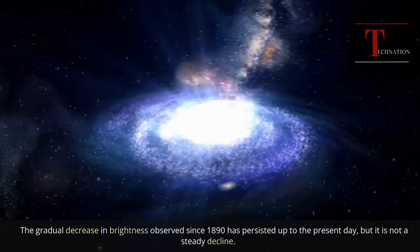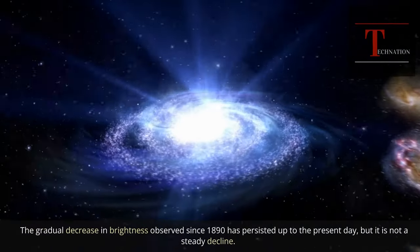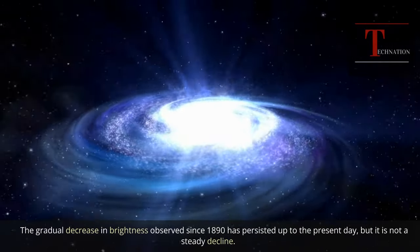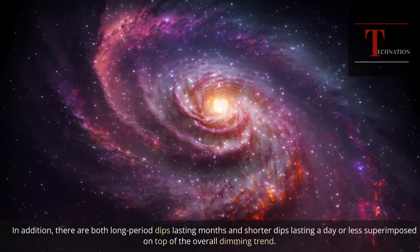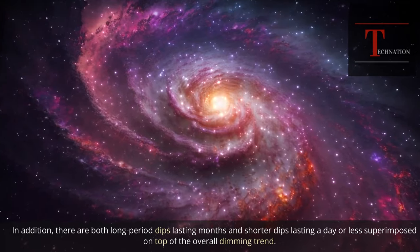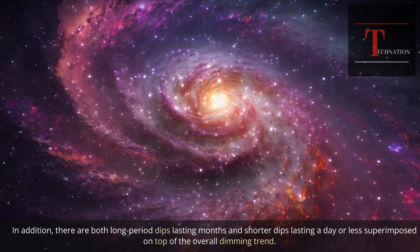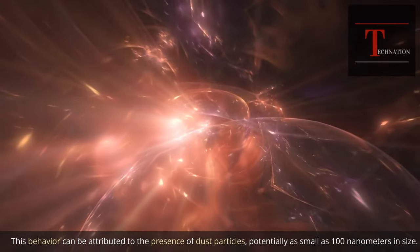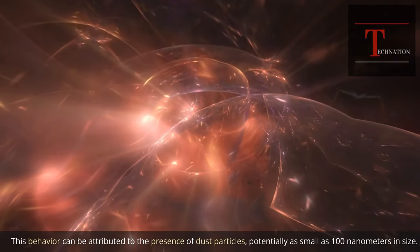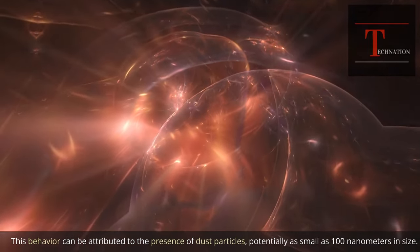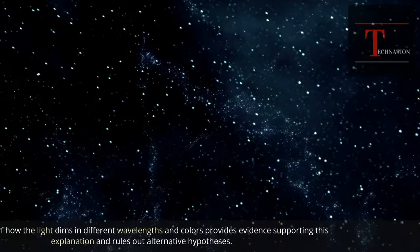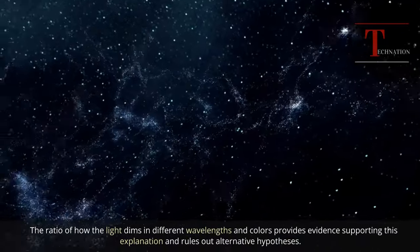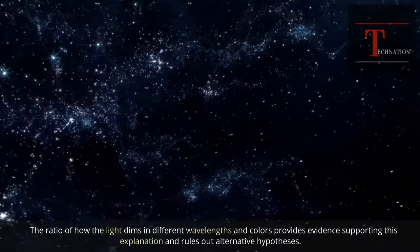The gradual decrease in brightness observed since 1890 has persisted up to the present day, but it is not a steady decline. In addition, there are both long period dips lasting months and shorter dips lasting a day or less superimposed on top of the overall dimming trend. This behavior can be attributed to the presence of dust particles, potentially as small as 100 nanometers in size. The ratio of how the light dims in different wavelengths and colors provides evidence supporting this explanation and rules out alternative hypotheses.